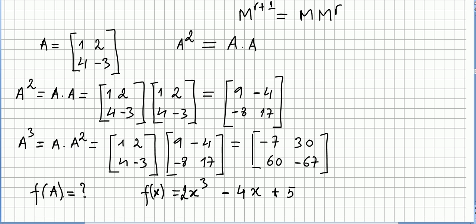Let us suppose now that we are asked to evaluate f of A, so the value of a matrix here, for this polynomial. So f of x, where f of x is 2x to the power of 3 minus 4x plus 5.